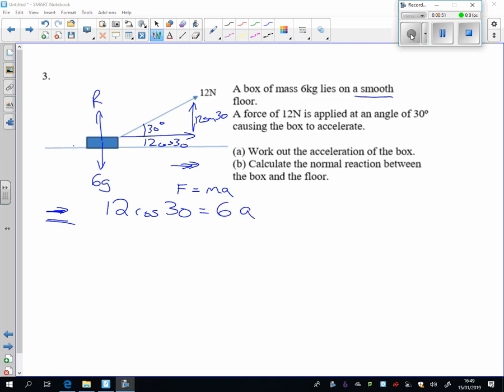the force equals mass times acceleration. So the acceleration is 12 cos 30 divided by 6. That's 2 lots of cos 30. That works out to be 1.73 metres per second squared.